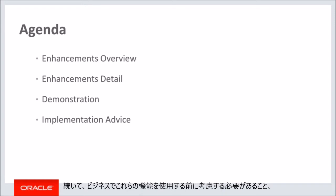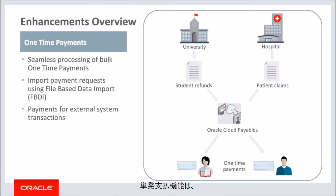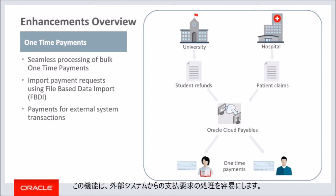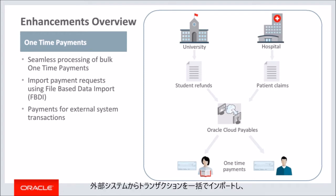Next, we'll explain what you need to consider before enabling these features in your business and what you need to know to set them up. The one-time payments feature makes it very easy to issue payments to external parties who are not suppliers. This feature facilitates straight-through processing of payment requests from an external system. You can import transactions in bulk from an external system using the file-based data import and create payments by leveraging the capabilities of Oracle Cloud Payables.